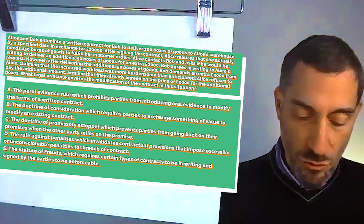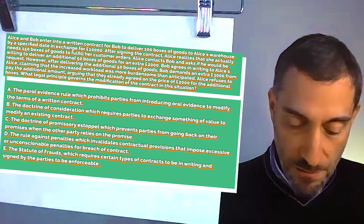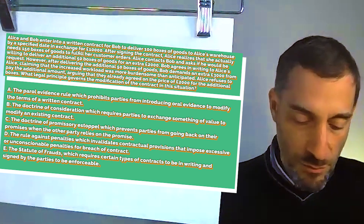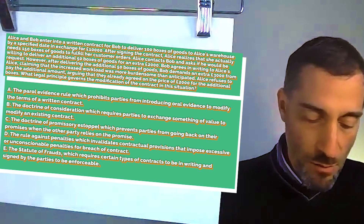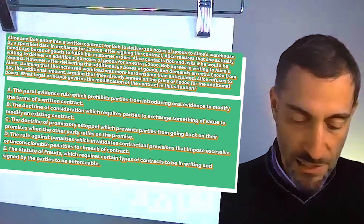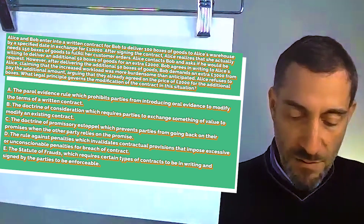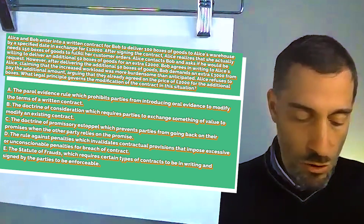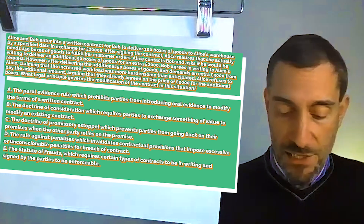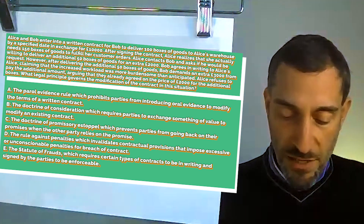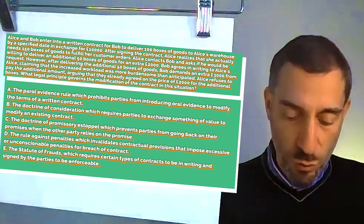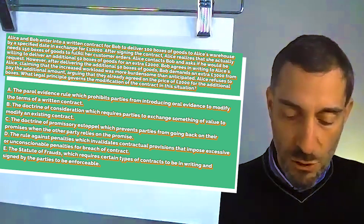Bob agrees in writing to Alice's request. However, after delivering the additional 50 boxes of goods, Bob demands an extra £3,000 from Alice, claiming that the increased workload was more burdensome than anticipated. Alice refuses to pay the additional amount, arguing that they already agreed on a price of £2,000 for the additional boxes.